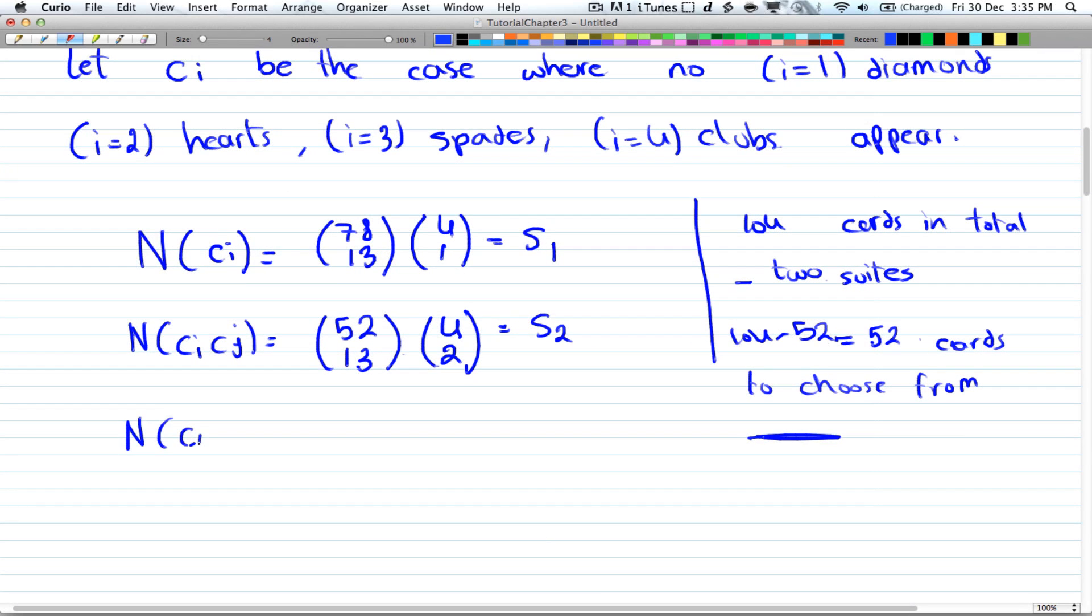Then we have c_i intersect c_j intersect c_k. And here we're taking 3 suits, and that will be 26 choose 13 times 4 choose 3. That will give us our s_3. And that's exactly what we did in the last 2 cases.